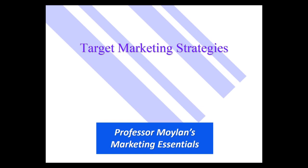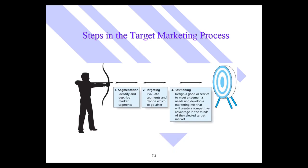In this module of Professor Moylan's Marketing Essentials, we're getting into target marketing strategies. Let's start with the three steps in the target marketing process. Step one: segmentation — identify and describe the market segments. Step two: targeting — evaluate segments and decide which to go after. Step three: positioning — design a good or service to meet a segment's needs and develop a marketing mix that will create a competitive advantage in the minds of the selected target market.